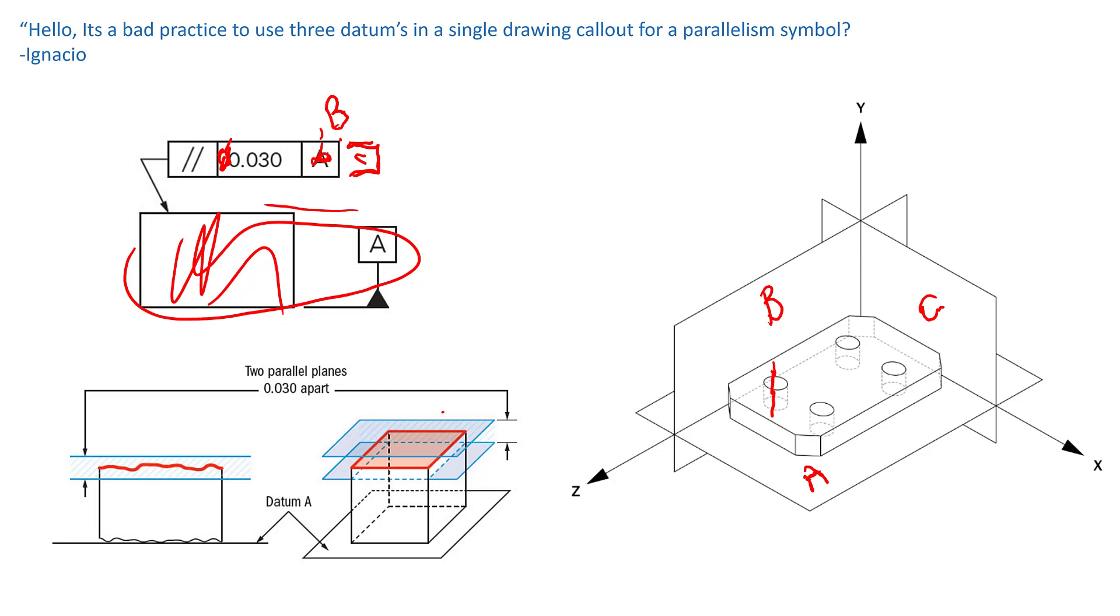So it is quite common to see two datums in the DRF there, the datum reference frame, for parallelism on a feature of size, but not three. And the reason for that in this case is A serves no purpose in there when it comes to parallelism itself.